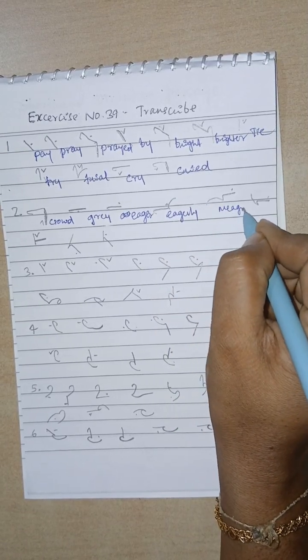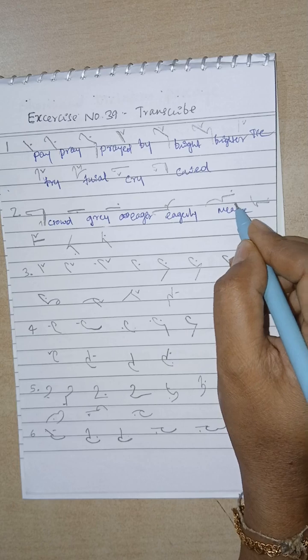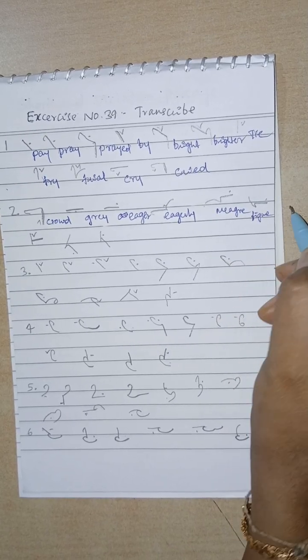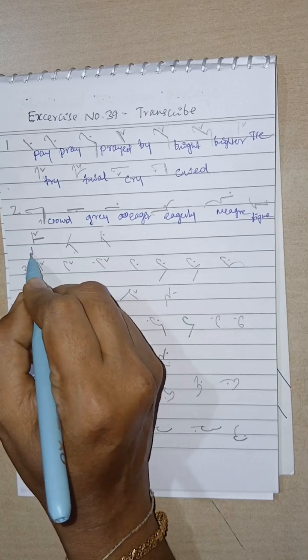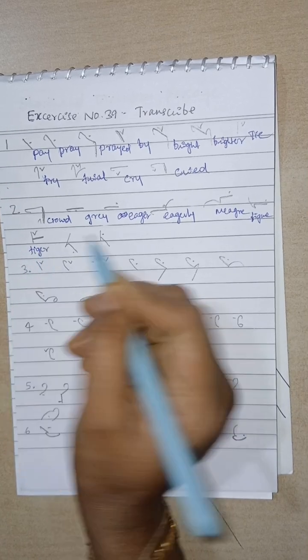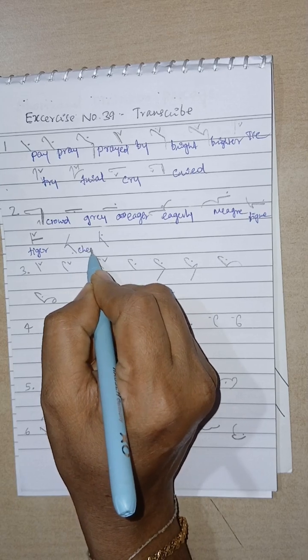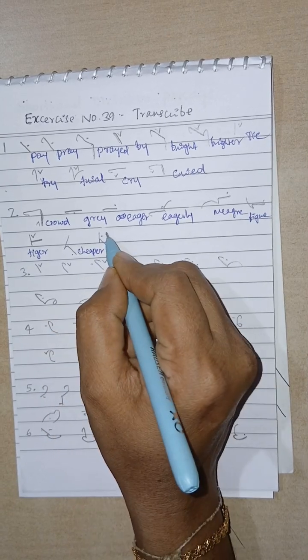Meager. M, Ger, Figure. F through the line, Ger. Then T, Ger, I diphthong, Tiger. Cheaper, Cheaper, E oval. Taper, T, Per.